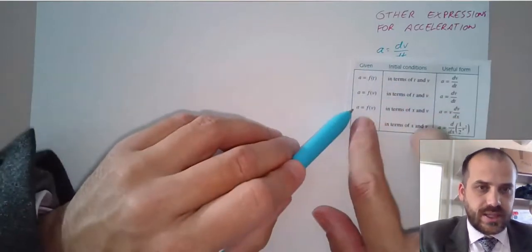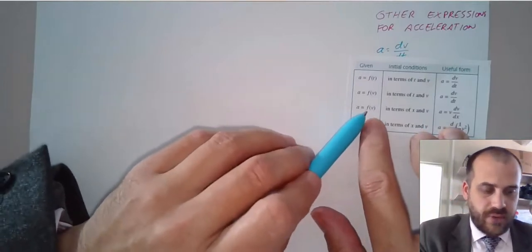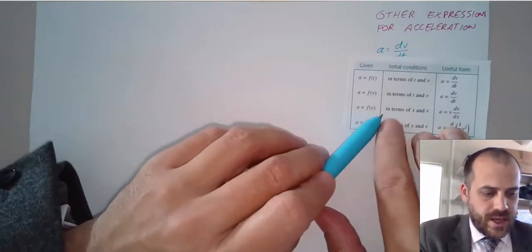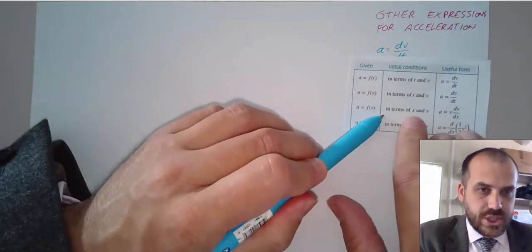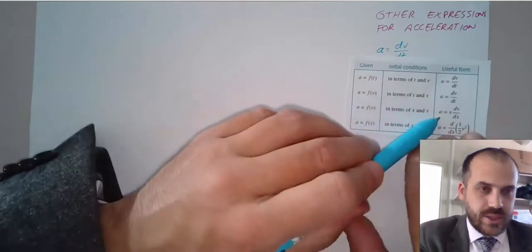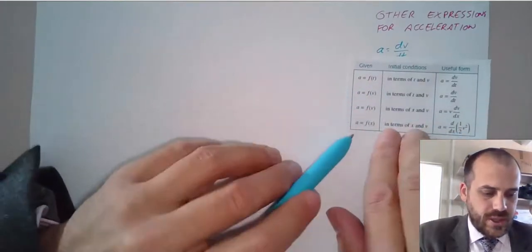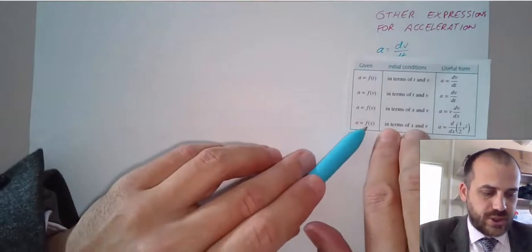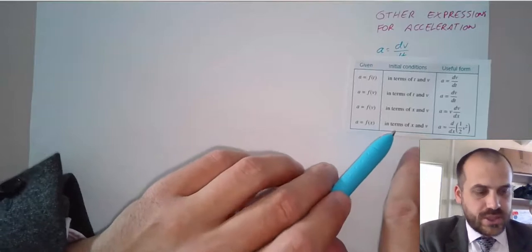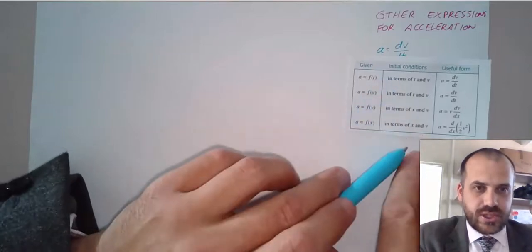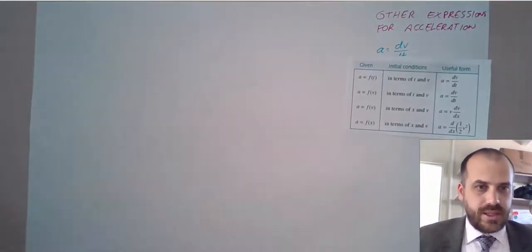This is where things start to get a little bit different. If you're given acceleration in terms of a function of velocity and your initial conditions are in terms of position and velocity, then using this formula is going to be a great way to go. And finally, if you're given acceleration as a function of position and your initial conditions are position and velocity, then you can use this formula here.